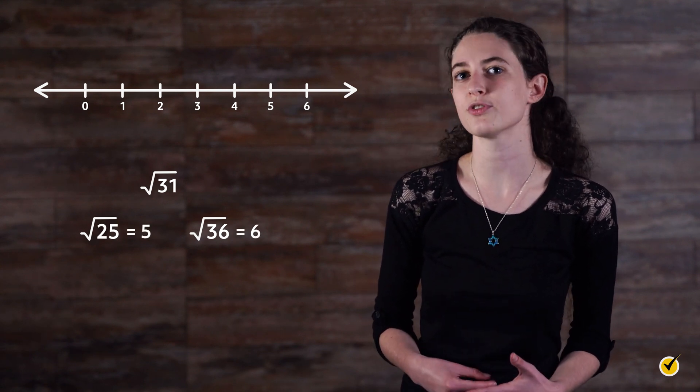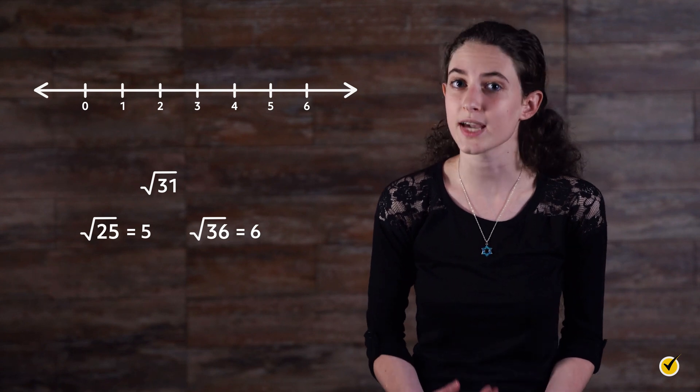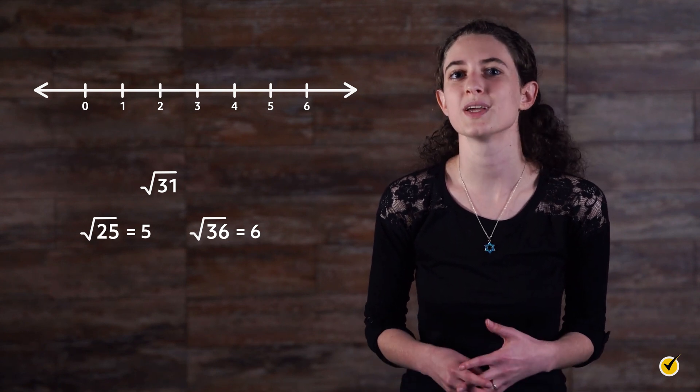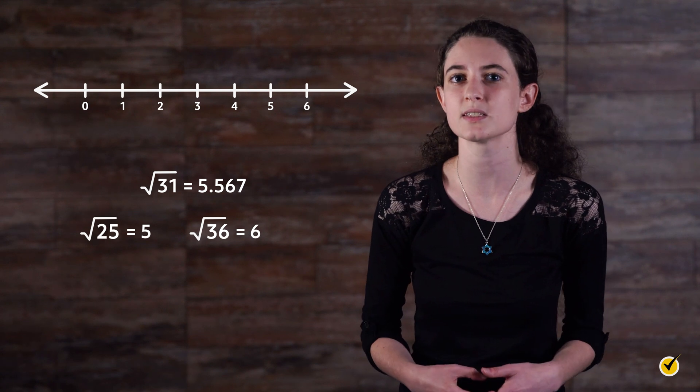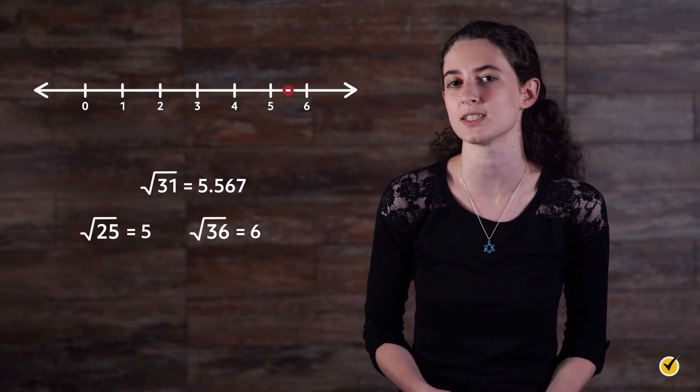If we calculate the square root of 31, we indeed get 5.567, so we can estimate that it falls halfway between 5 and 6.